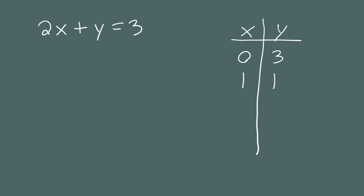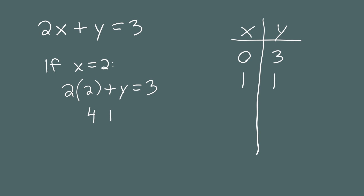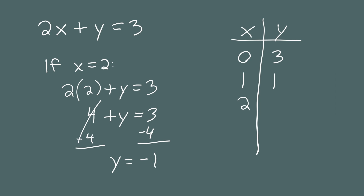Let's find another one. How about if x equals 2? We plug it into the equation and find out what y has to be. That gives us 2 times 2 plus y equals 3, or 4 plus y equals 3. We subtract 4 from both sides, giving us y equals negative 1. So if x is equal to 2, then y has to be equal to negative 1.